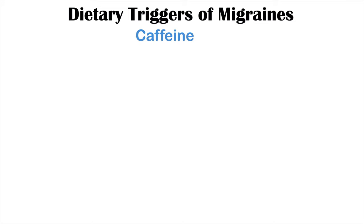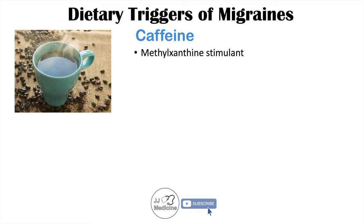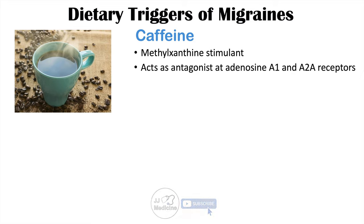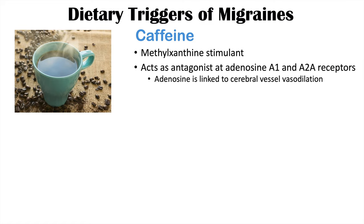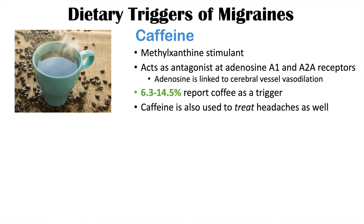The first dietary trigger is caffeine, a methylxanthine stimulant that acts as an antagonist at adenosine A1 and A2A receptors. Adenosine is linked to cerebral vessel vasodilation, which is why caffeine may trigger migraines. Between 6.3% and 14.5% of individuals with migraines report caffeinated beverages as a trigger. Interestingly, caffeine can also be used to treat headaches, and stopping caffeine after heavy use can cause rebound headaches.